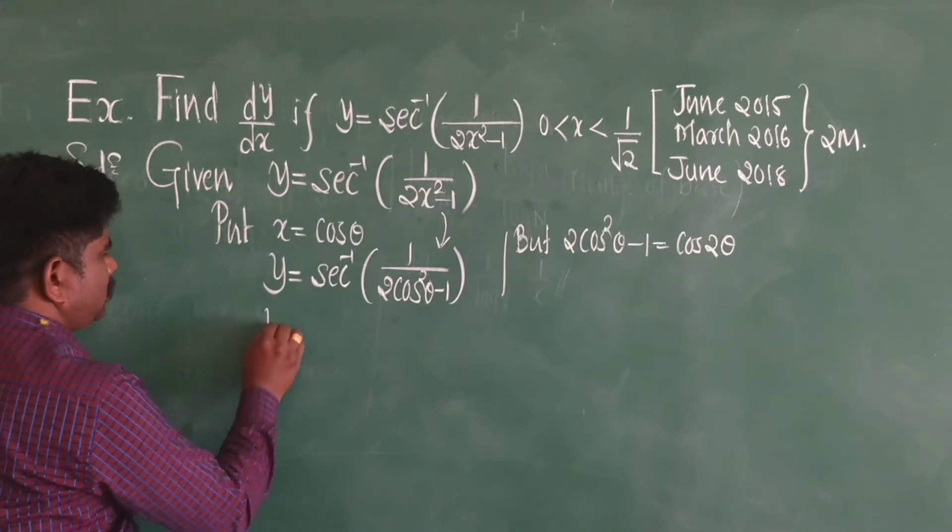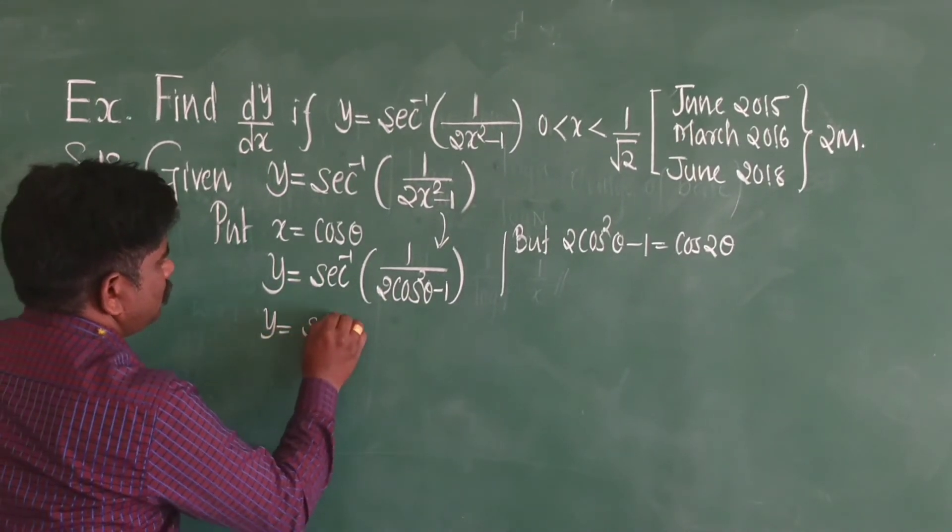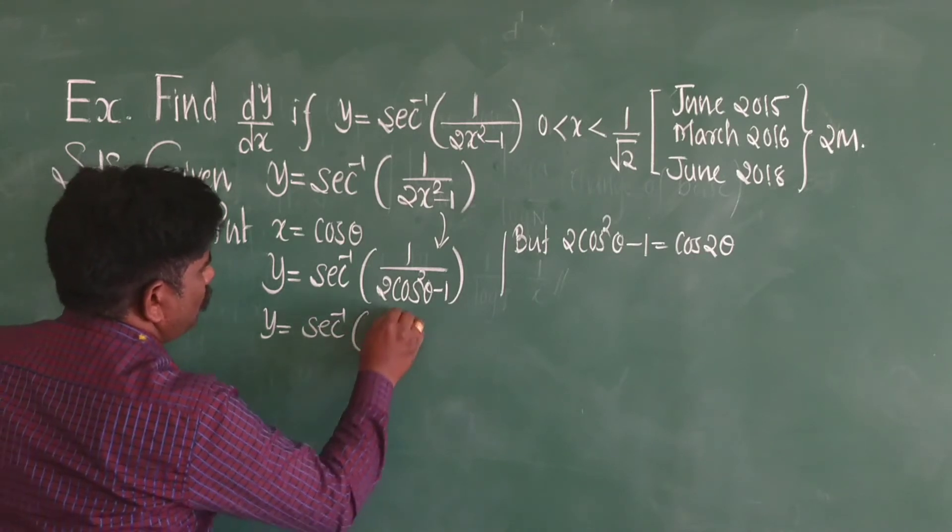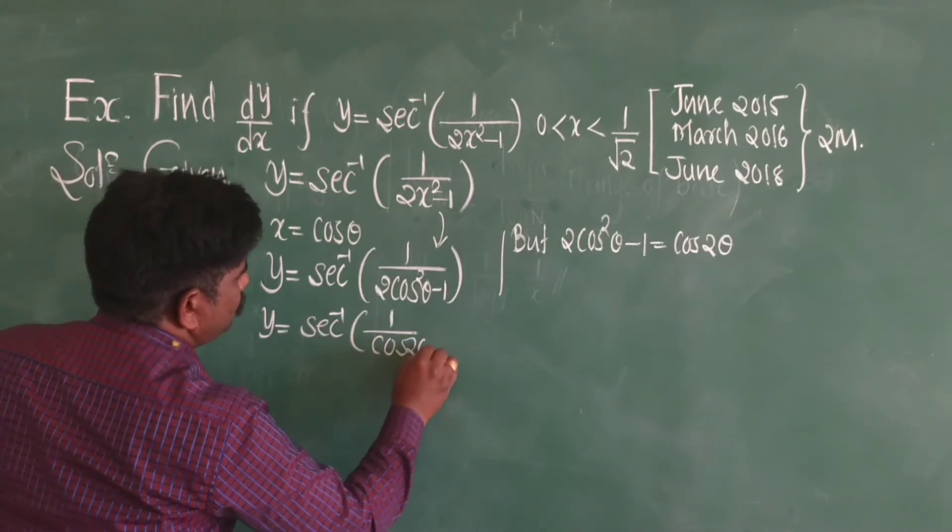I will replace this with now cos 2 theta. Now, sec inverse of 1 upon cos 2 theta.